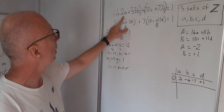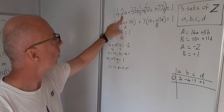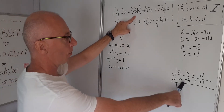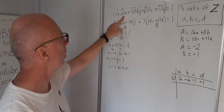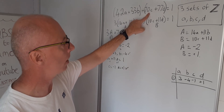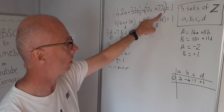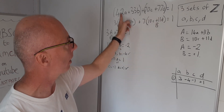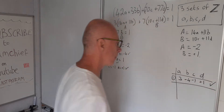Let's verify: 42(3) = 126, 33(−4) = −132, so 126 − 132 = −6. Then 70(−1) = −70 and 77(1) = 77, so −70 + 77 = 7. Finally, −6 + 7 = 1. The first solution set checks out.